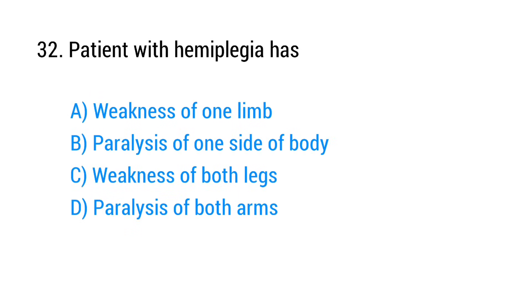Question number 32. Patient with hemiplegia has? The right answer is option B: Paralysis of one side of the body.